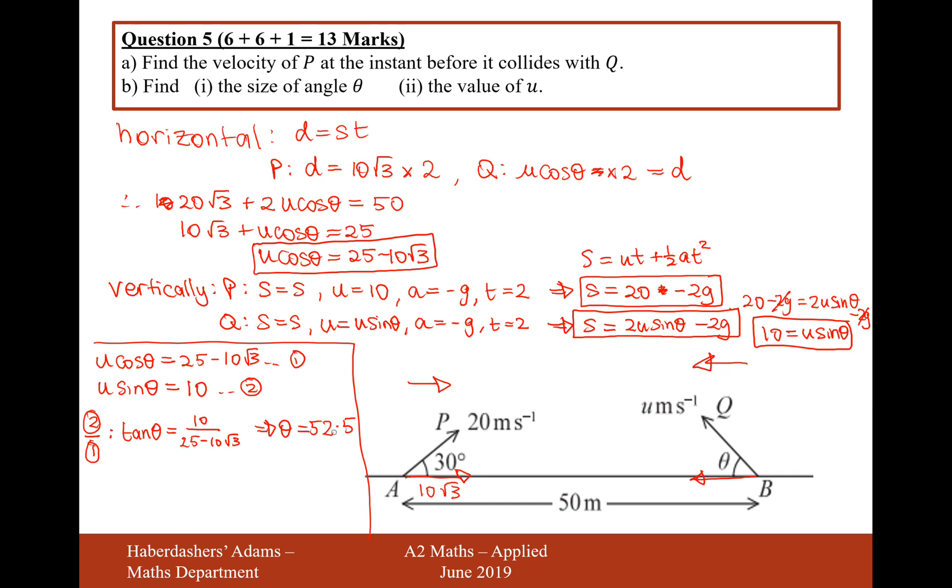And then if we substitute that back into one of these expressions here, u sine 52.5 equals 10. And then if we divide the sine 52.5 onto the sides of 10, divide by sine answer, gives us an answer of 12.6. So there we are, lovely. We found theta and we found mu u. We found theta and u. So there we are. That's the answer for part b.